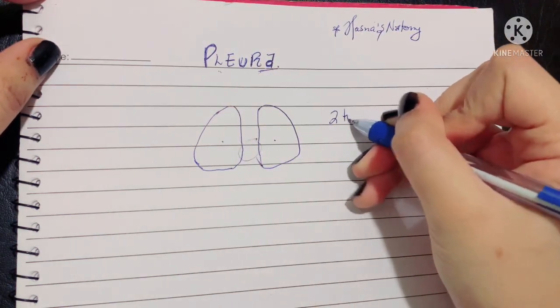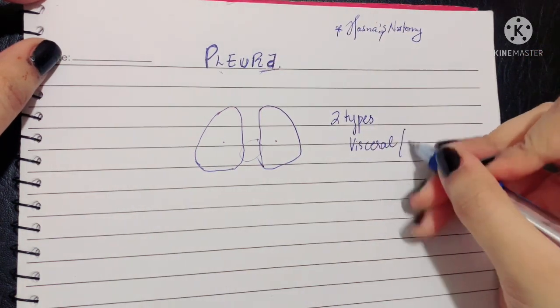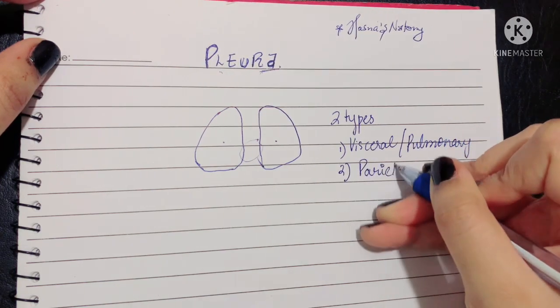There are two types of pleura: the visceral pleura, the other name for this is the pulmonary pleura, and parietal pleura, the outer covering.